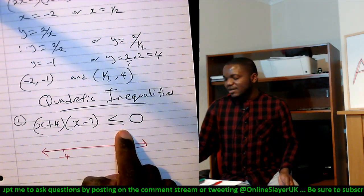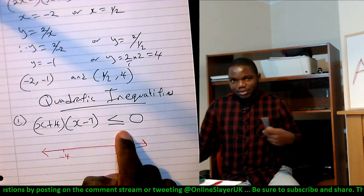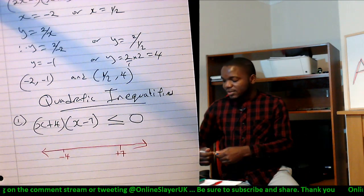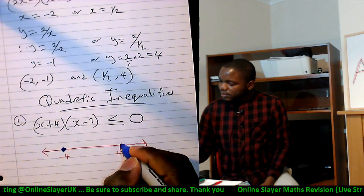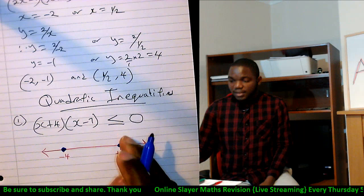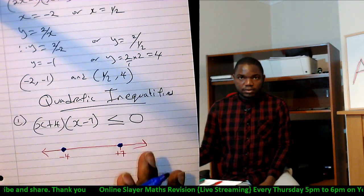So minus 4, which is a solution, and plus 7, which is another solution to the equation, is included in the overall solution. First thing, the next thing is we have three segments in this number line.